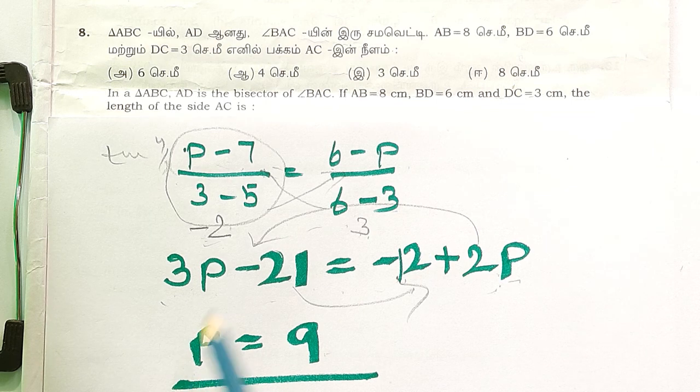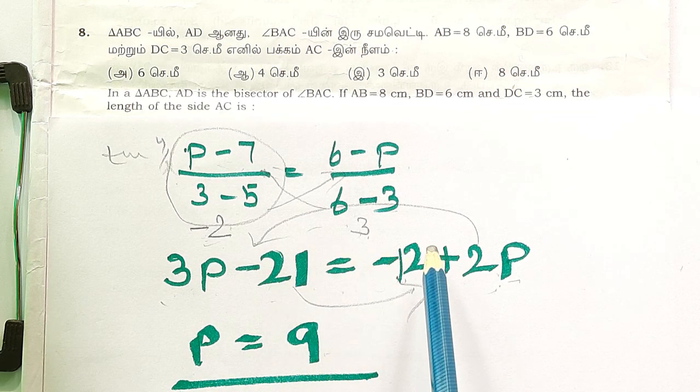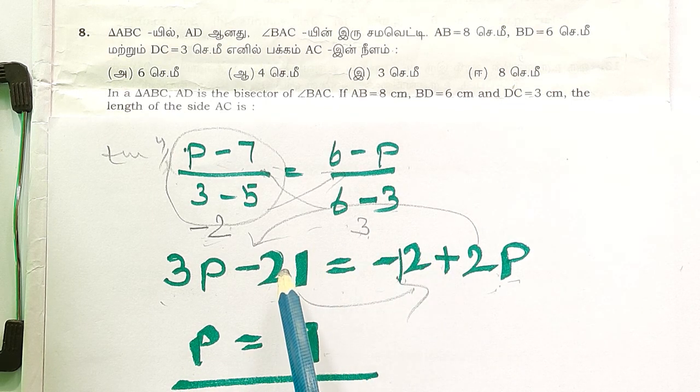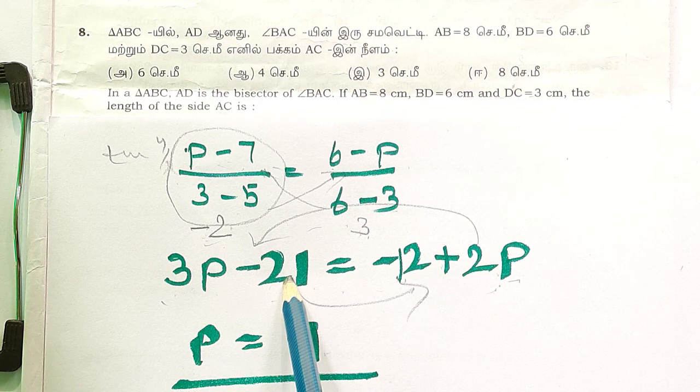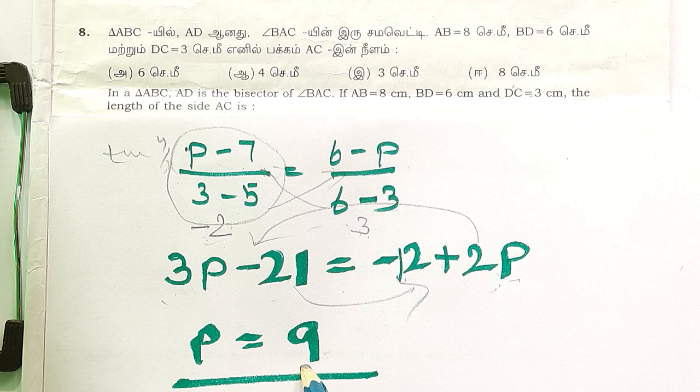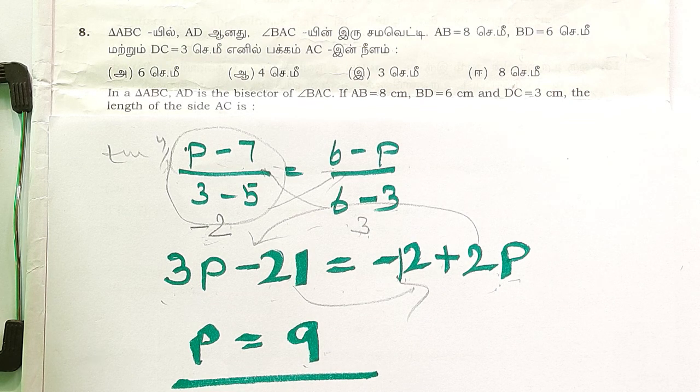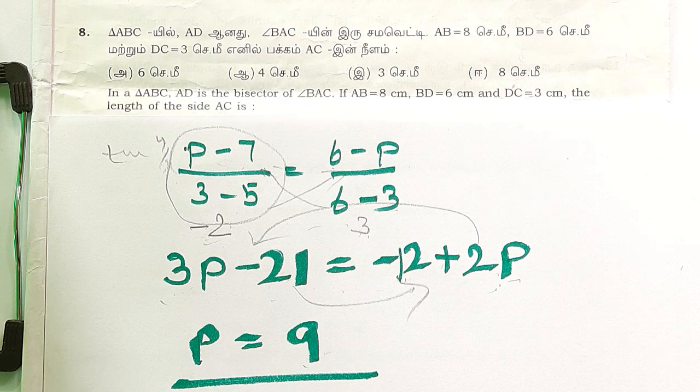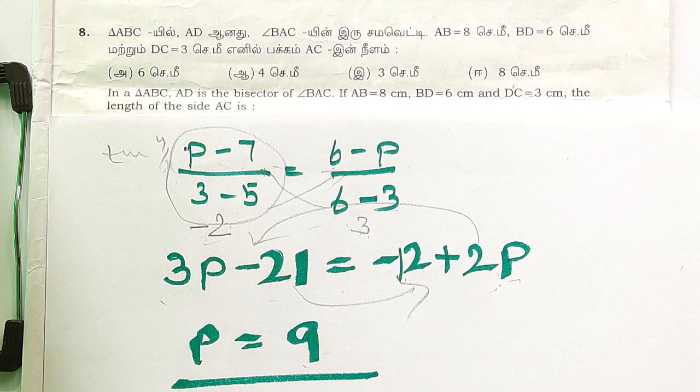2p gives p. 21 shifts to right side, 21 plus, 21 here, minus 12. So p is 9. That's all, but it is a five mark question we did well.